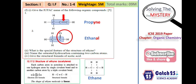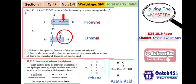The next question asks for the structural formula of acetic acid. This question will not appear in the 2021 board exam as it has been deleted, but students appearing in 2022 onwards will encounter it. Acetic acid is vinegar, with the structural formula CH₃COOH. With that, nine marks have been gained so far.